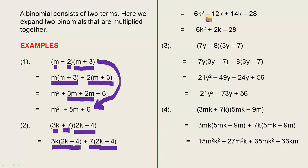Now we look at these two terms here, which are like terms. 14k minus 12k is 2k, so that's the answer.